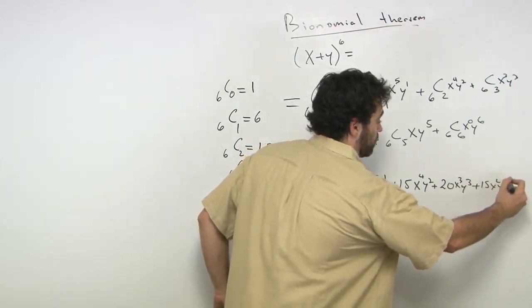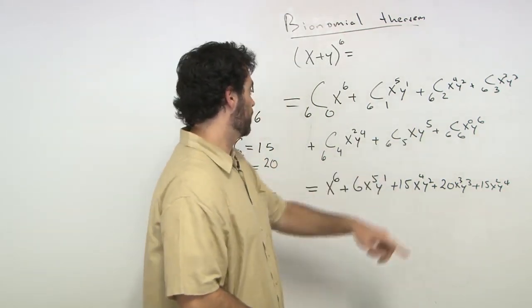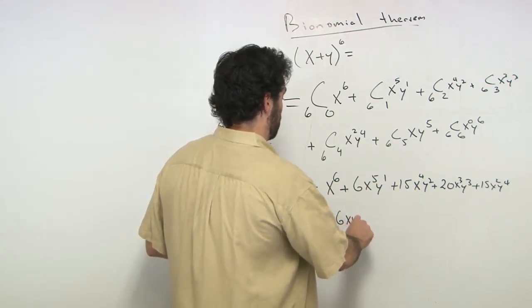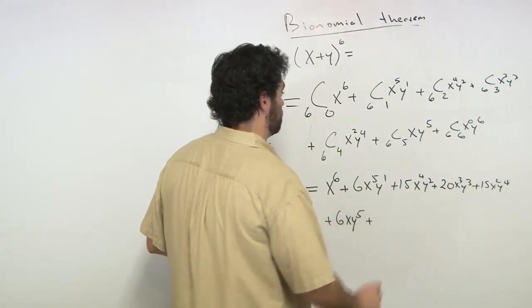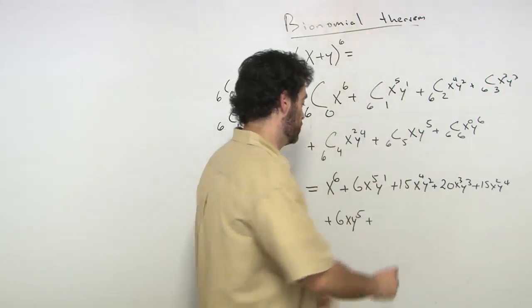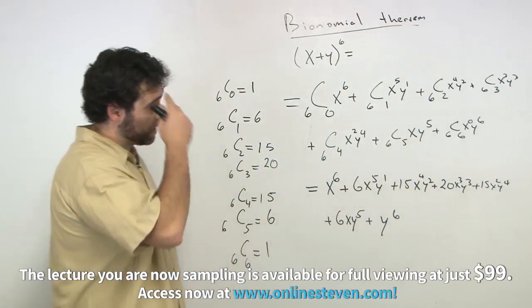And I'll write it right down here. Remember this is all one big line. 6c5 is 6, we know is 6xy5, plus 6c6, which is 1, x to the 0 is 1, so plus y to the 6. So there is our expansion.